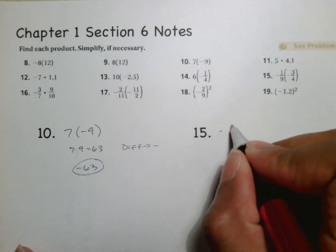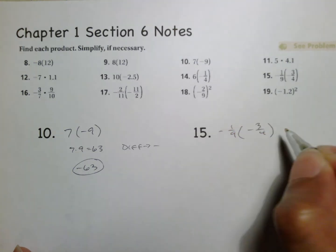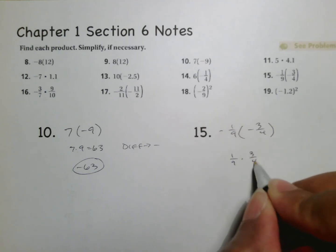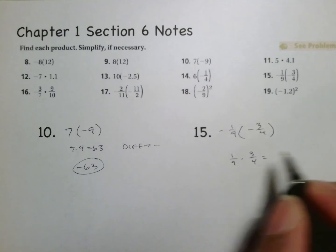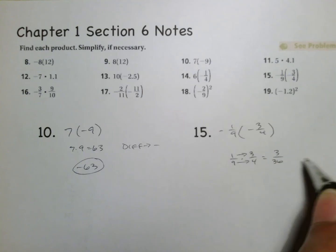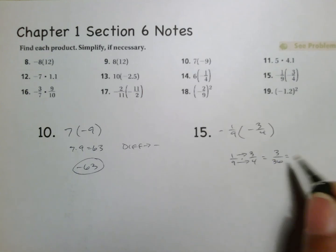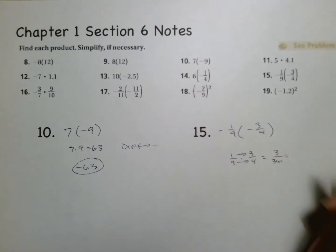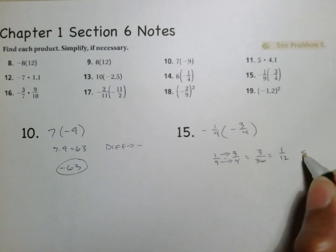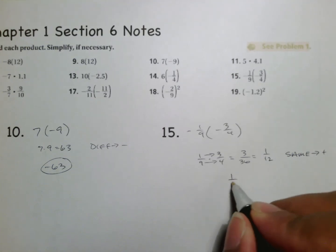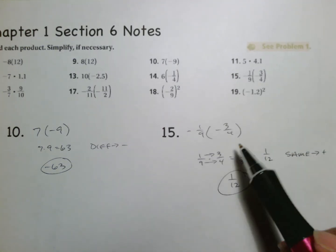On number 15 we have negative one-ninth times negative three-fourths. The first thing we do is recognize we are simply going to do one-ninth times three-fourths, ignoring the signs. When you multiply fractions you go across the top: 1 times 3 is 3. Then 9 times 4 is 36. Three over 36 — both can be divided by 3, giving us one-twelfth. But you have to remember to consider the sign: the signs are the same, which means it should be positive, so my answer is positive one-twelfth.